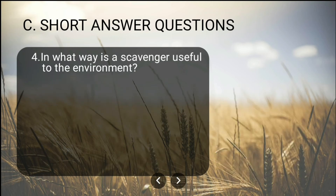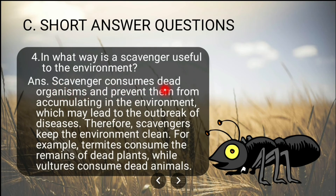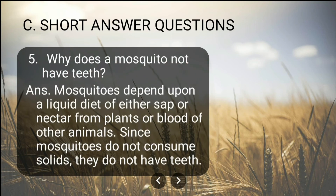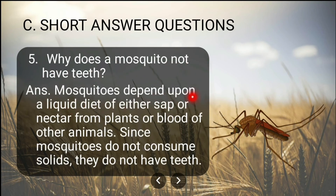Fourth question: In what way is a scavenger useful to the environment? Scavengers consume dead bodies of organisms and prevent them from accumulating in the environment, which may lead to the outbreak of disease. Therefore, scavengers keep the environment clean. For example, termites consume remains of dead plants while vultures consume dead animals.